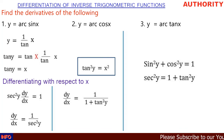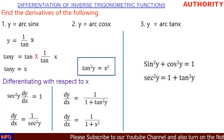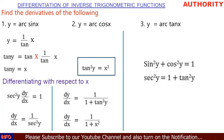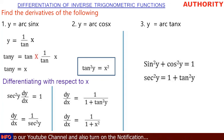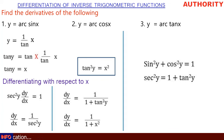From earlier, tan(y) equals x, so tan²(y) equals x². Replacing tan²(y) with x²: dy/dx equals 1/(1 + x²). So the derivative of arctan(x) is 1/(1 + x²). We've now found the derivatives of arcsin(x) and arctan(x). Let's take more examples.